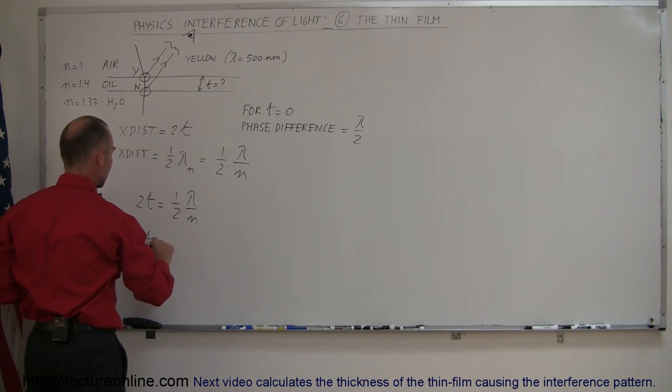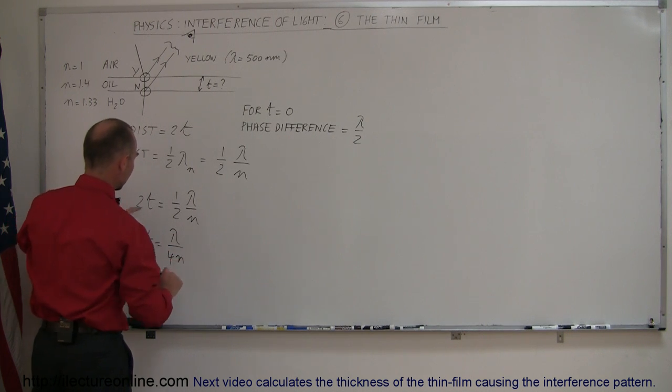Solving this for t, we get t is equal to lambda divided by 4n, because 2 times 2 is 4.